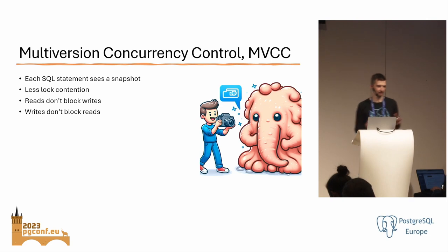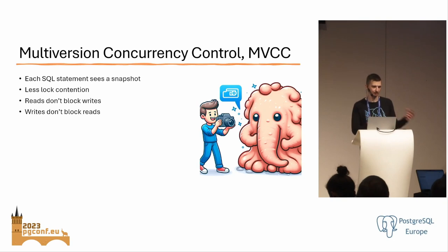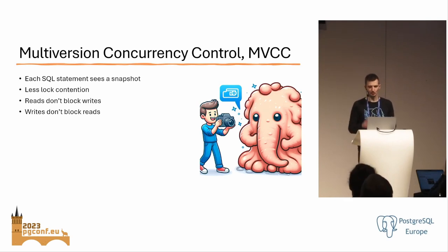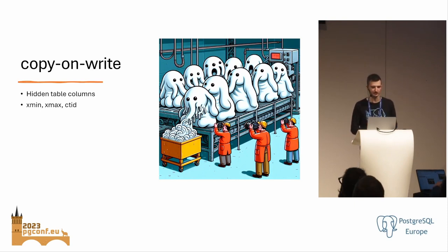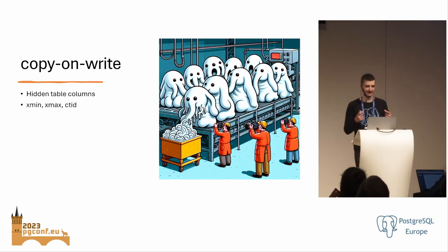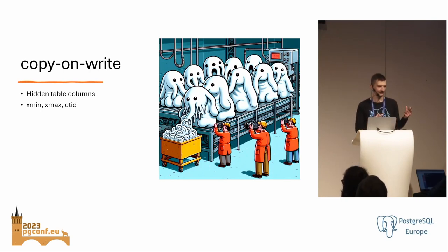You might have heard of multi-version concurrency control in PostgreSQL. That's essentially how we handle concurrency - every SQL statement does a snapshot of time. Thanks to this there's less lock contention, reads don't block writes, writes don't block reads. What I want to dive into is copy-on-write. That term is often used in file systems like ZFS from the BSDs. Copy-on-write means that whenever you're making a change, you're copying the data you're changing. That's exactly how multi-version concurrency in PostgreSQL works. When you're modifying a row, a copy of that row is made, all modifications are done on the copy.